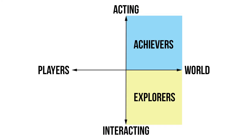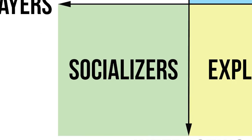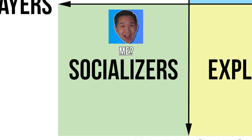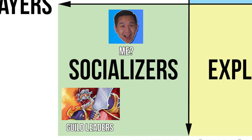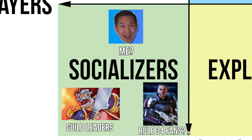Meanwhile, if you prefer interacting with other players, you'd be called a socializer. These players are those who play for the social aspects of games. For some, gaming is a way to interact with the friends they already have, while for others, gaming might be a way for them to meet new people with similar interests. In single player contexts, socializers may even find enjoyment in meeting in-game characters with colorful personalities. For socializers, gaming might seem like more of a tool for interaction more than anything else.